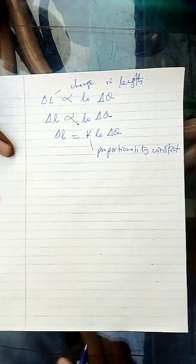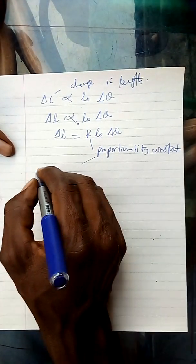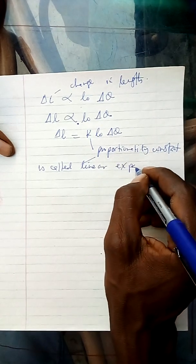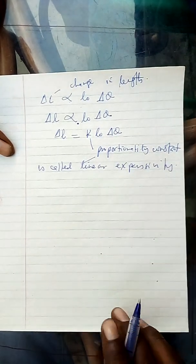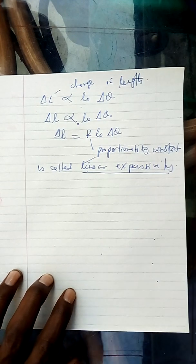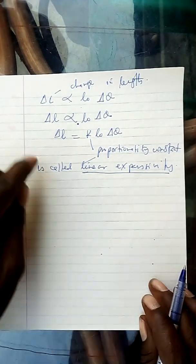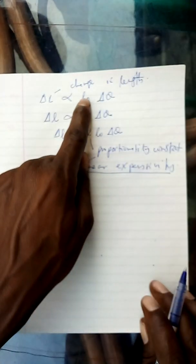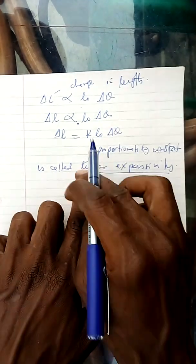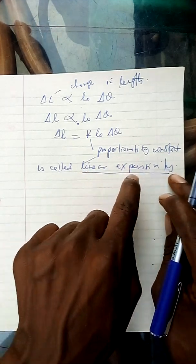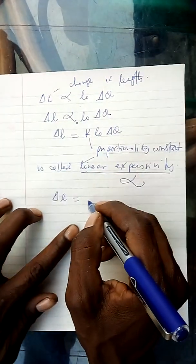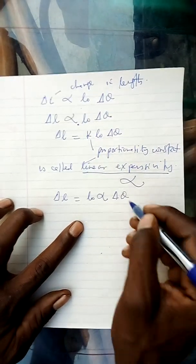This proportionality constant is called linear expansivity. The proportionality constant is called linear expansivity, and it is the one that explains the nature of the material. We have said there are three factors on which the change in length depends: original length, change in temperature, and also the nature of the material. The nature of the material is what we obtain in linear expansivity — it determines the nature of the material. Therefore, change in length is equal to original length times linear expansivity times change in temperature.